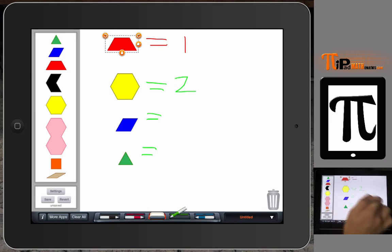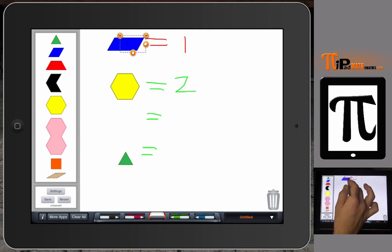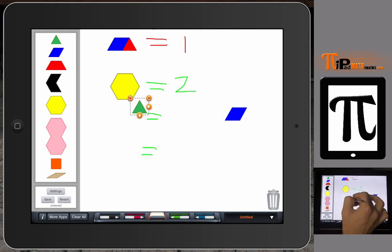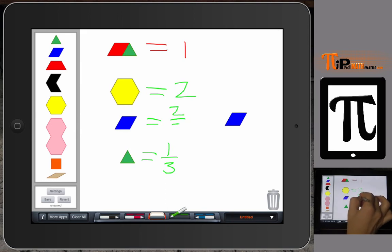Well, we notice if the red trapezoid is one, then the blue parallelogram does not fit entirely over it. And I can't create another blue parallelogram that's going to equal exactly the size of our red trapezoid. So we're going to need to figure out what this part is before we can figure out what the blue parallelogram is. And by doing that, we notice that three triangles make up the whole. So therefore, one green triangle is going to equal one third. And if that's true, then the blue parallelogram, it takes two green triangles to make up the blue parallelogram. So one parallelogram is going to be equal to two thirds.